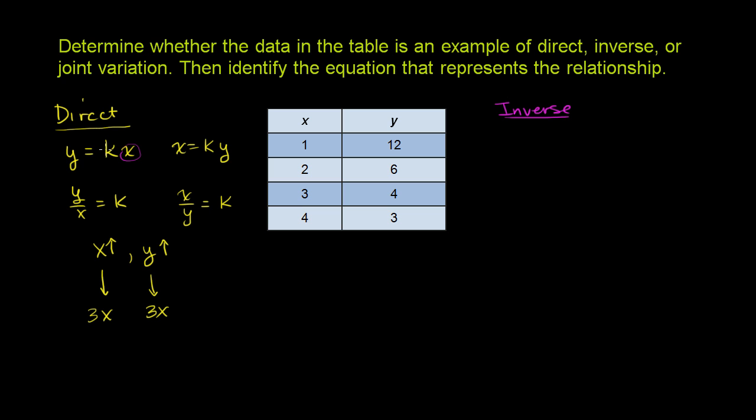We can see that with some examples. You could pick a k, let's say k was 1. So if y is equal to x, if x goes from 1 to 3, then y is also going to go from 1 to 3. If you triple x, you are also going to end up tripling y.